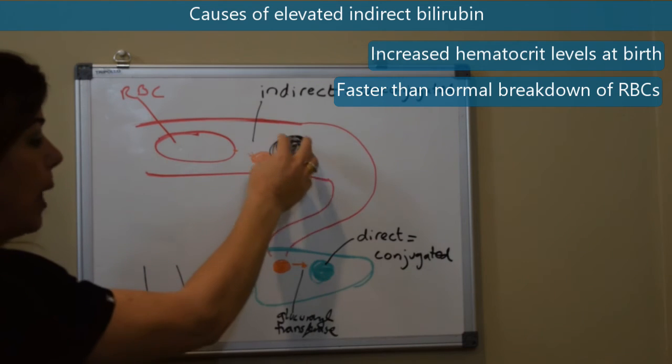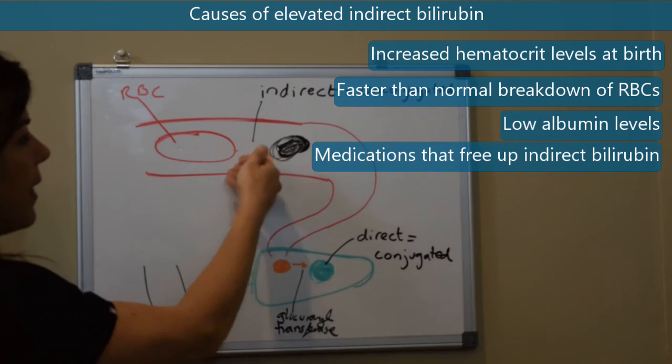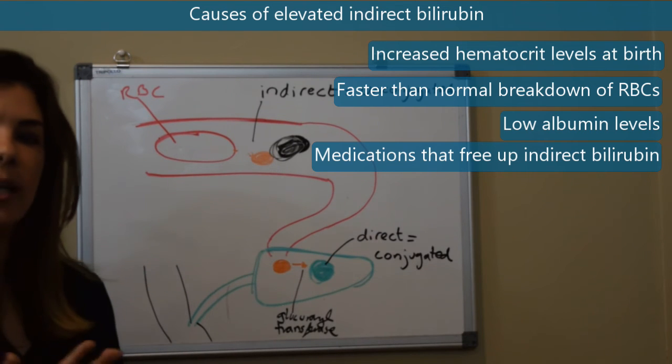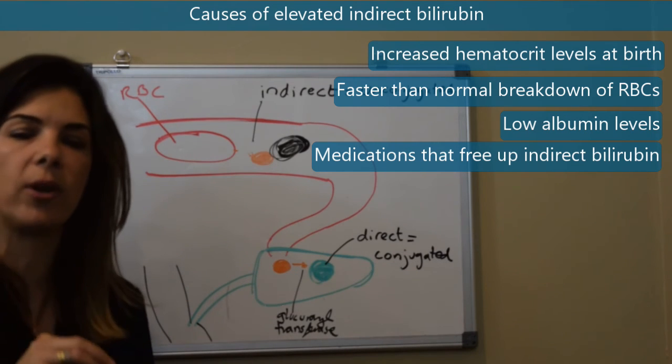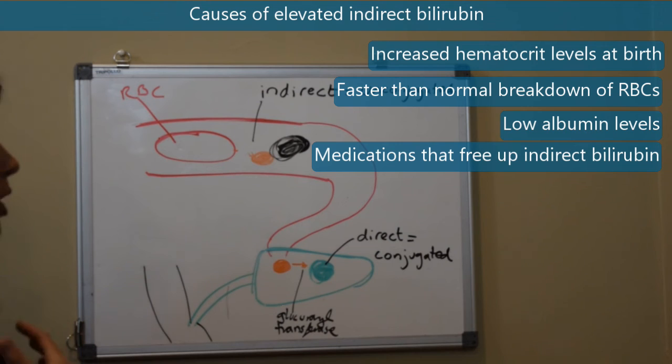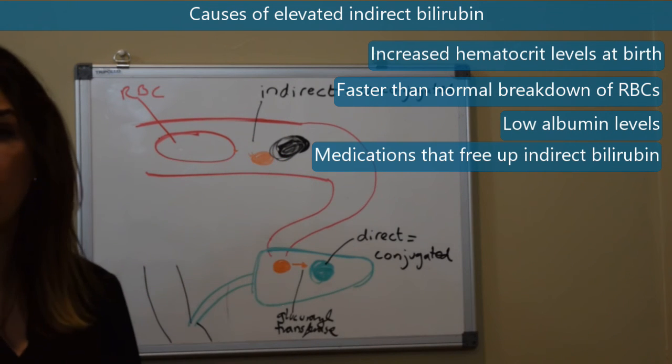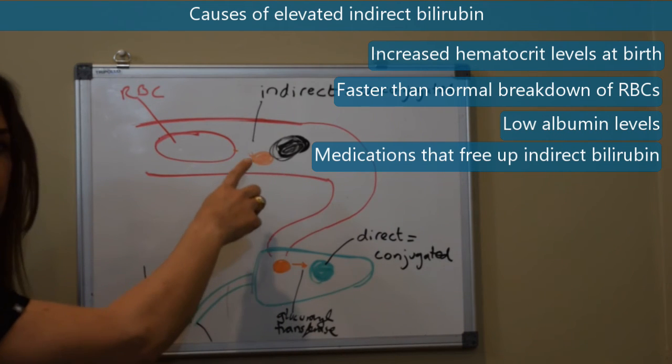If you have very low albumin or if you have any other medications that could free up that indirect bilirubin you might not necessarily know that number by checking it on the lab because it's not necessarily always just measuring the free indirect bilirubin. But we should be aware of the fact that with a very low albumin or if you're administering any of those medications or the fatty acids that the amount of free indirect bilirubin is going to be high.